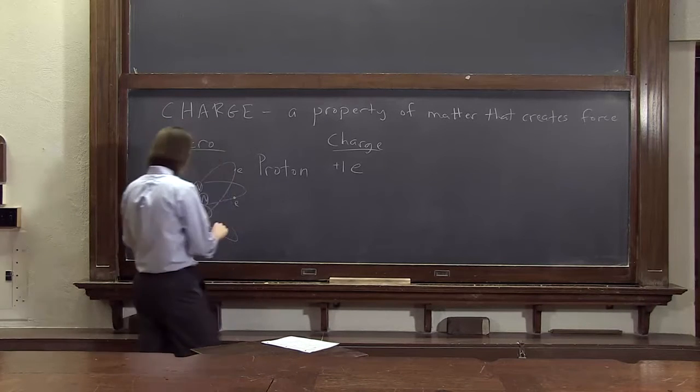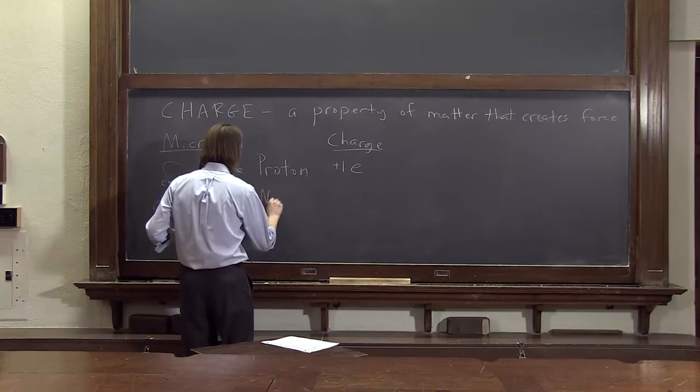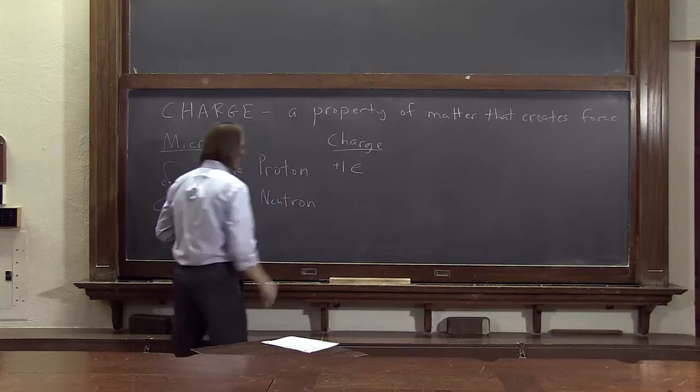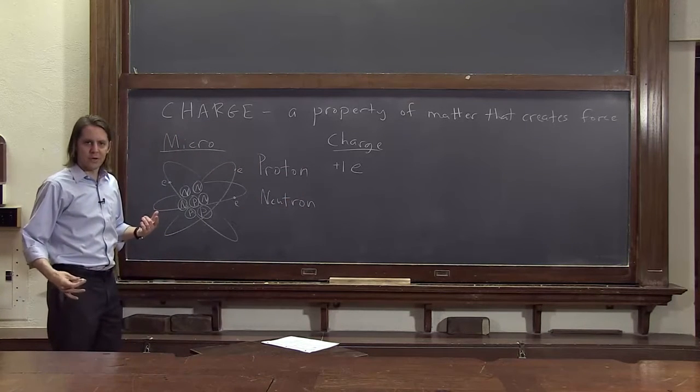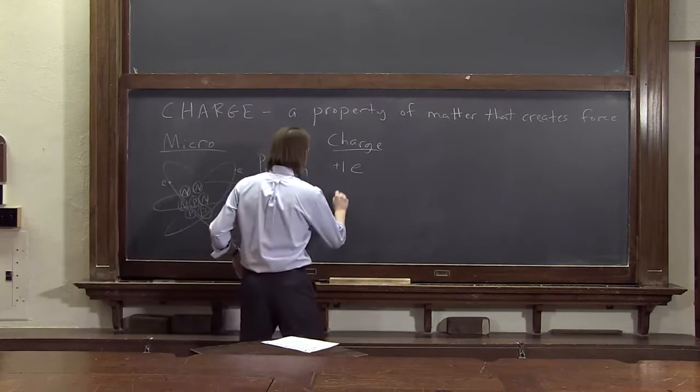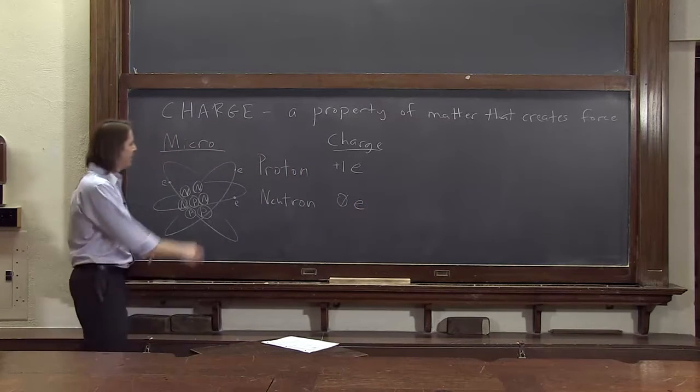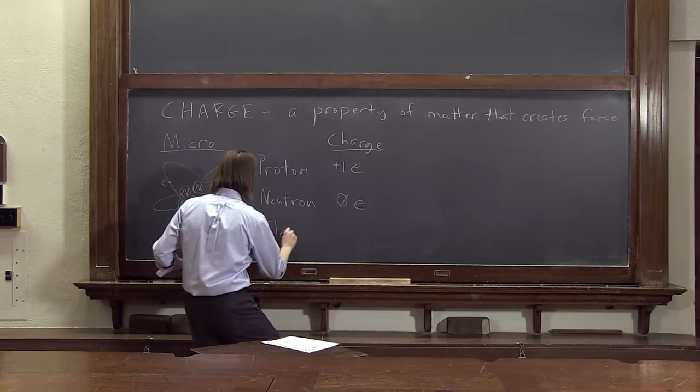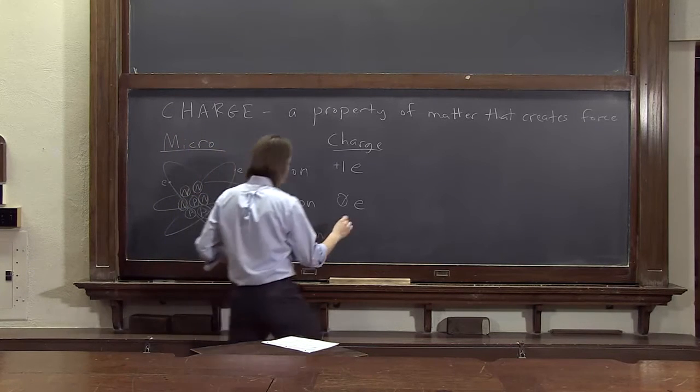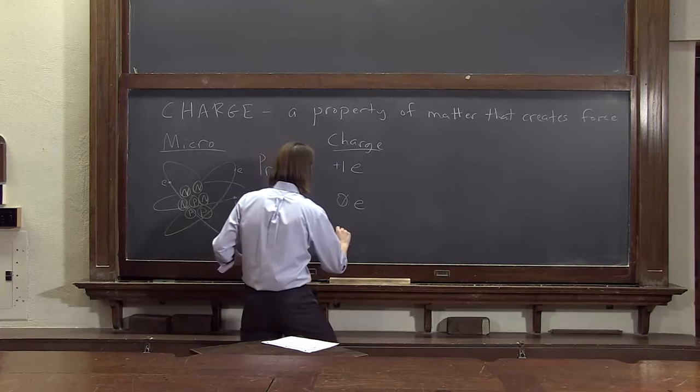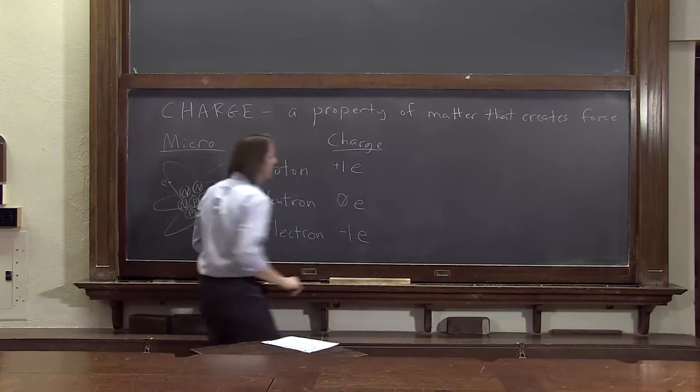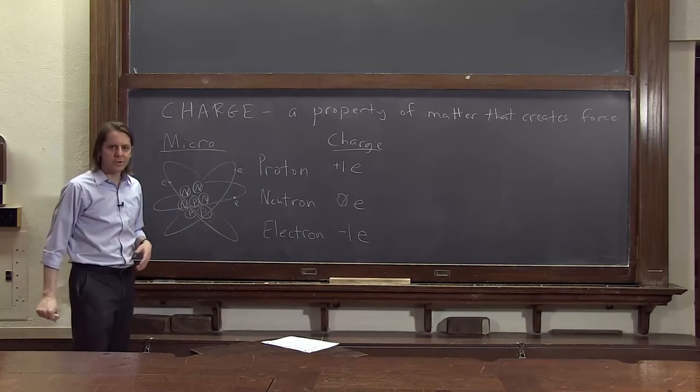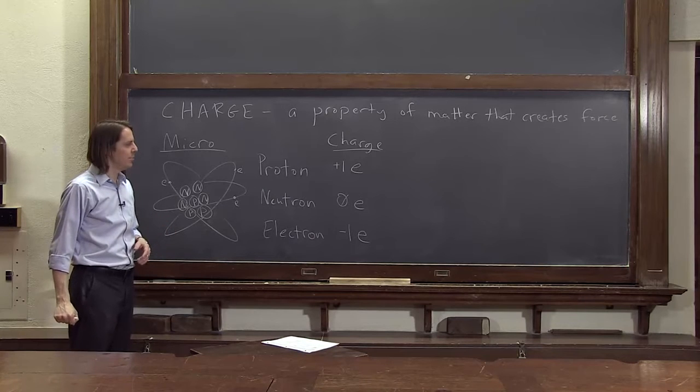There's also, in the nucleus, there's the neutrons. And the charge of a neutron is zero. The neutrons are neutral. Zero E. And then flying around the outside, are the electrons, and electrons are negative. So its charge is minus one E. Same amount of charge as a proton, just the opposite sign.